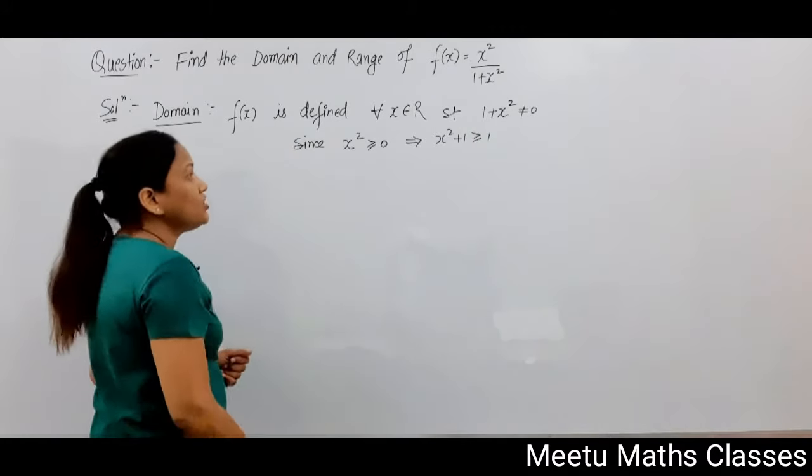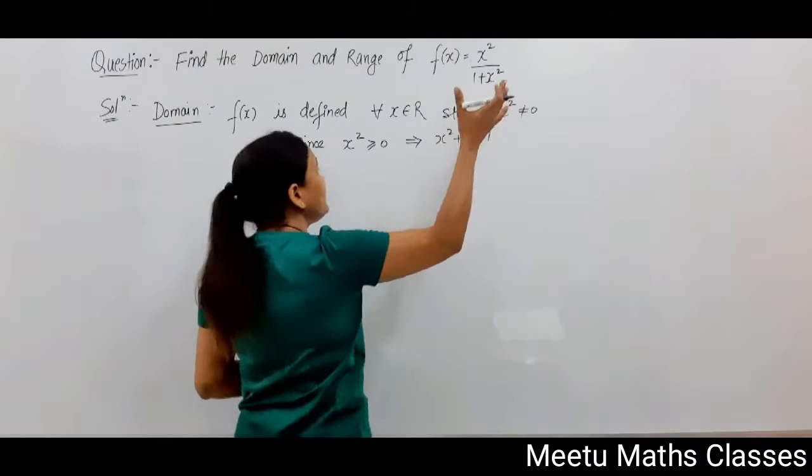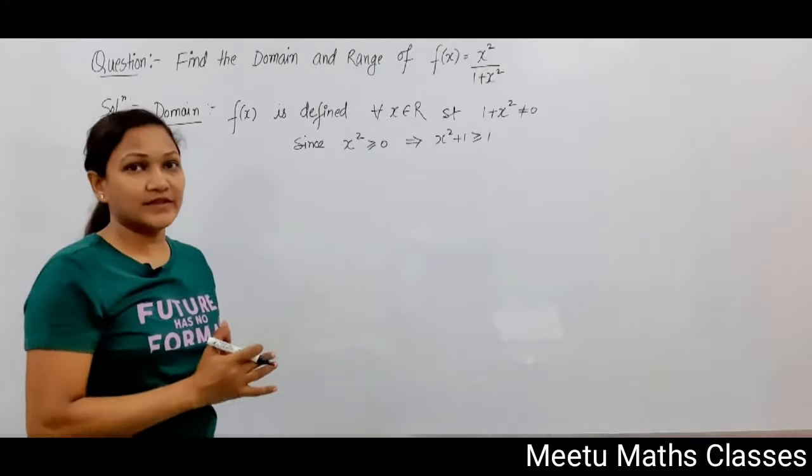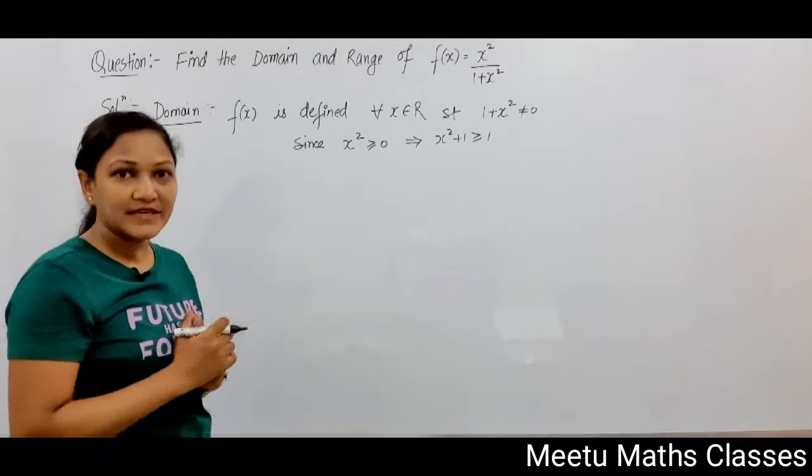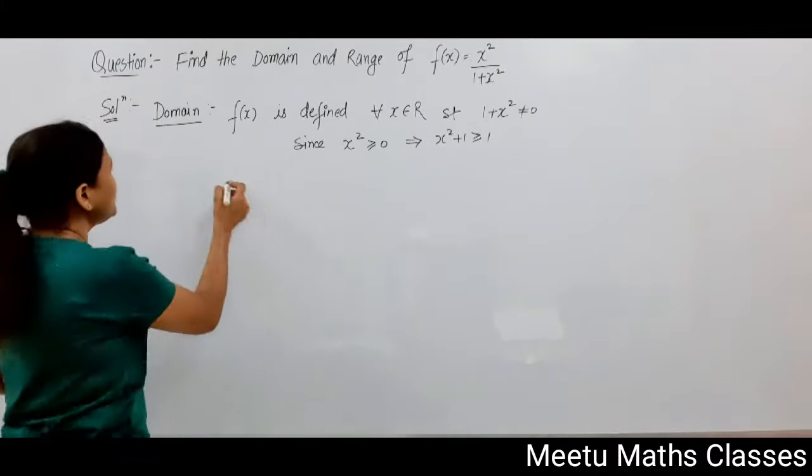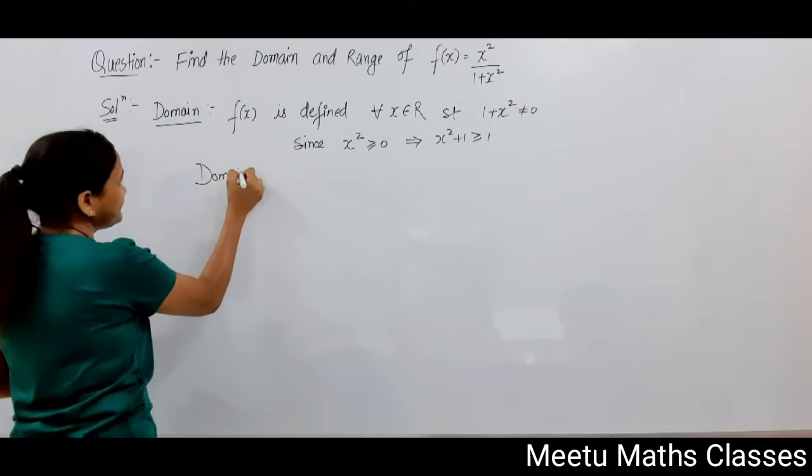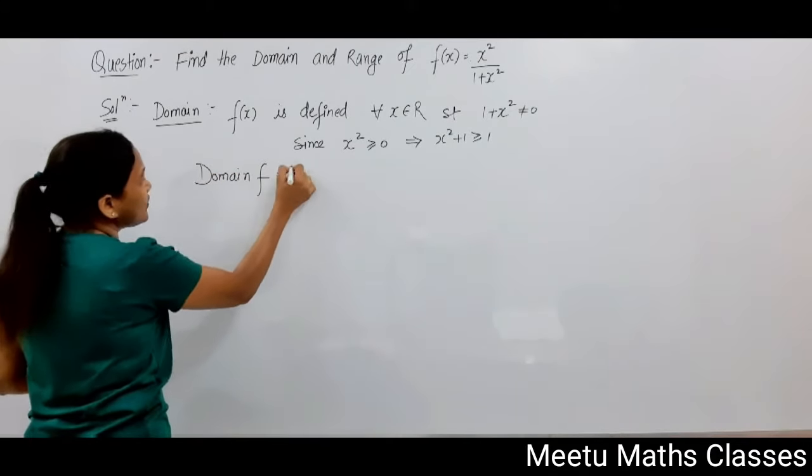So x² + 1, the denominator, will always be greater than or equal to 1, so it can never equal 0. So the domain of your function f is the whole real line.